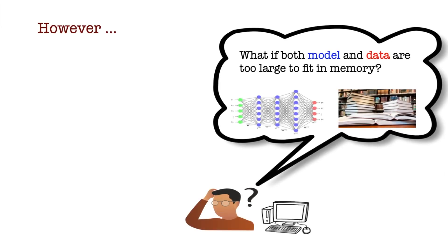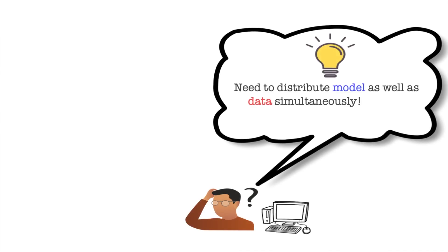However, we have a problem. What if both the model and the data exceed the size of a single machine? Well, looks like we'll have to find a way to distribute both the model as well as the data simultaneously. We call this hybrid parallelism.